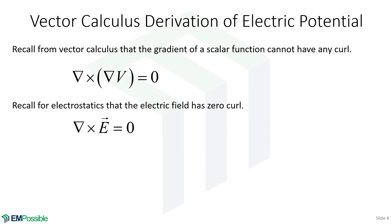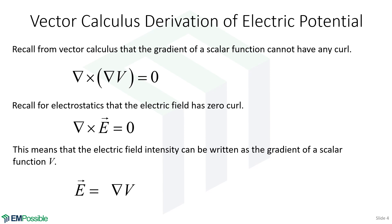From electrostatics, we saw that the curl of the electric field has to be zero. Looking at these two equations and comparing, both have the curl of something equaling zero. So for electrostatics, when the curl of the electric field is zero, we must be able to write the electric field as the gradient of some scalar function, which we call the electric potential.